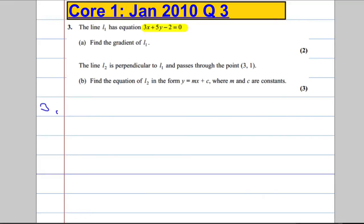Okay. Right, best way to do this is to rewrite it in the form y equals mx plus c. So we're going to rearrange the equation 3x plus 5y minus 2 equals 0 into the form y equals mx plus c.